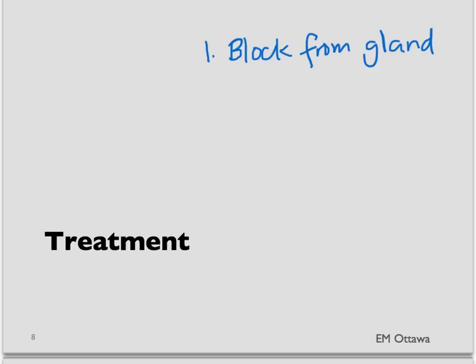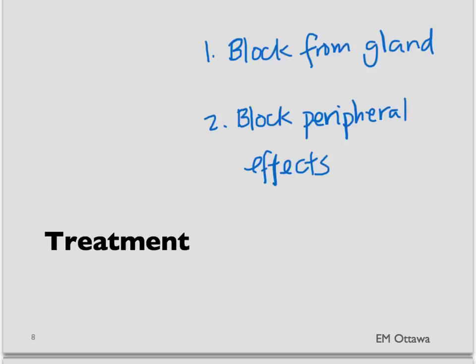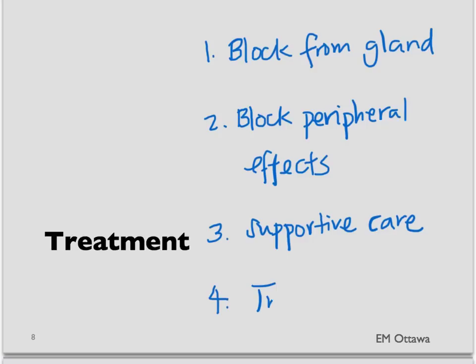Let's talk about the different kinds of treatment. Treatment is divided into four different components. First, we block the hormone from the thyroid gland. Second, we block the peripheral effects of the hormone. Thirdly, we give supportive care to the patient, ensuring the ABCs are addressed. And fourthly, we look for that trigger and we treat it.